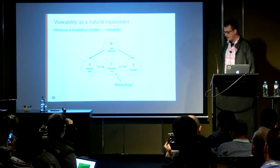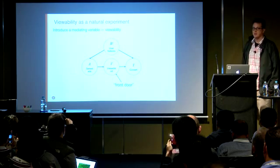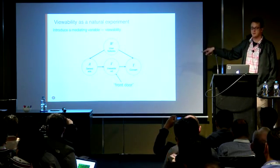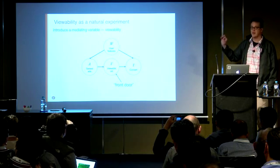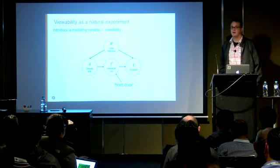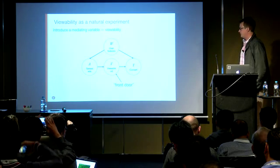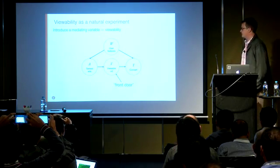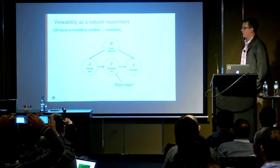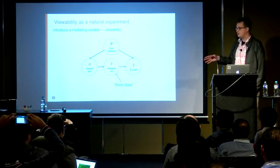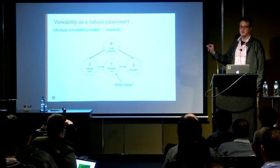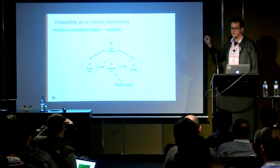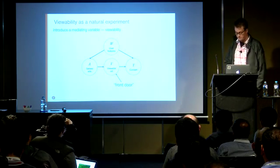The viewability of an ad can be thought of as a mediator — it sits in between an ad being served and a user converting. If you don't have the event that the ad was viewed, we know that the ad is going to be useless. This is sometimes referred to as a natural experiment. Pearl referred to this as the front door criterion. This is a situation which allows you to have an unconfounded estimate of the effect of ads even though you don't know the user features — the confounding user intent.